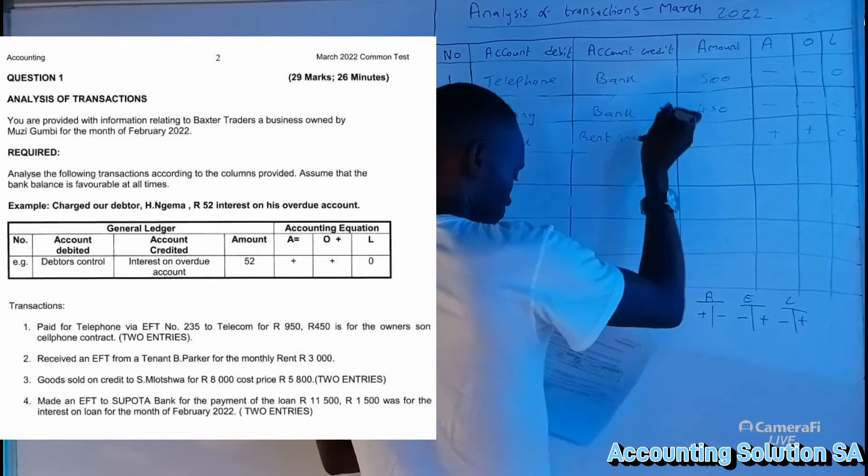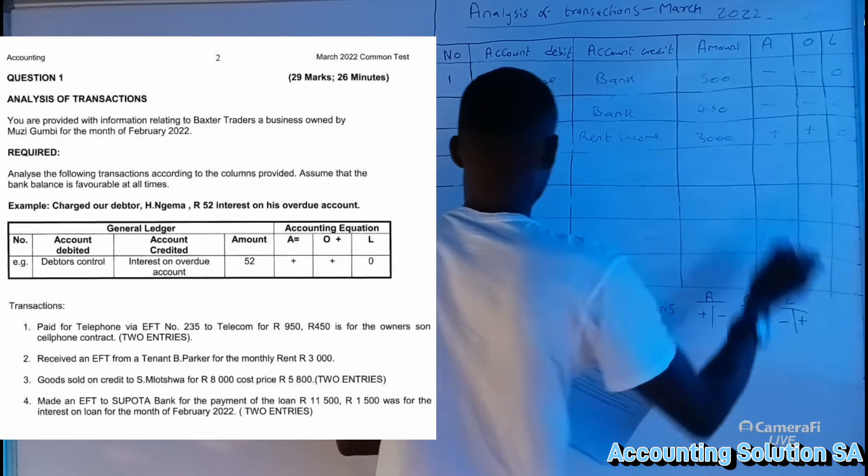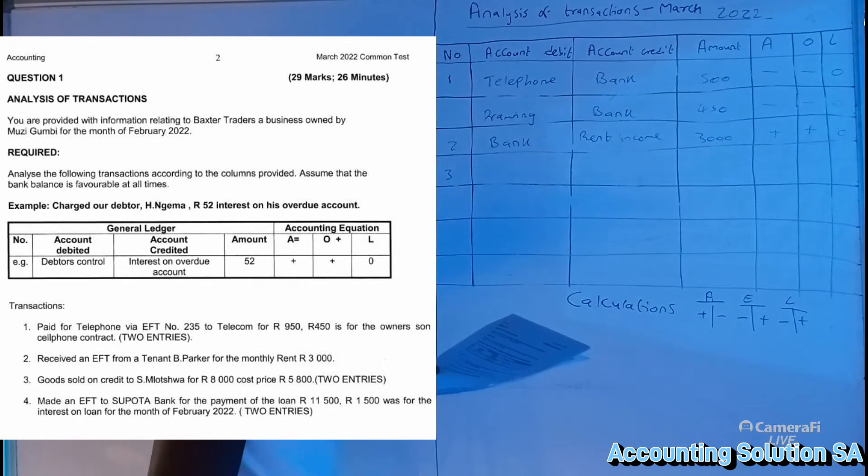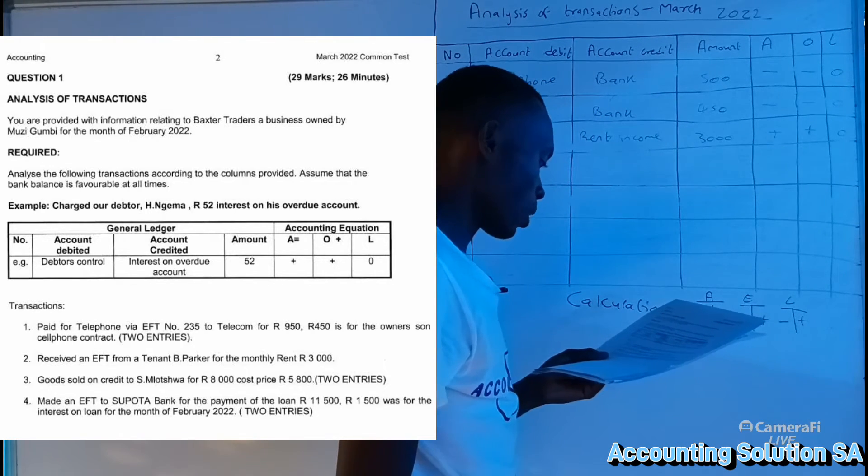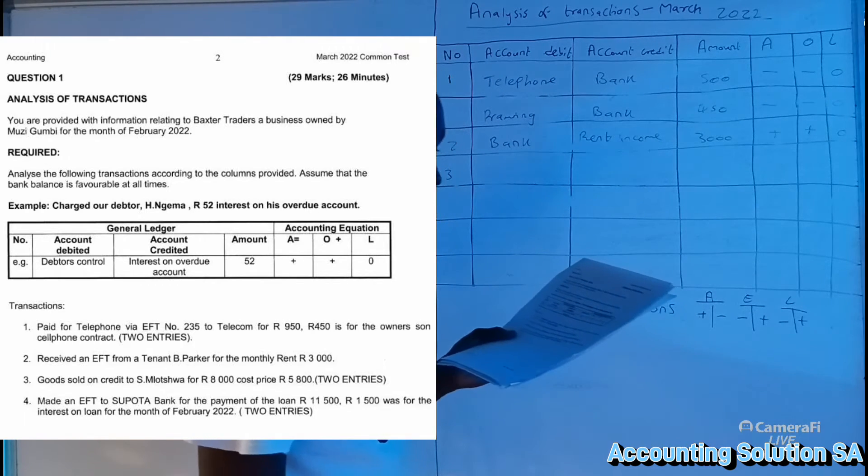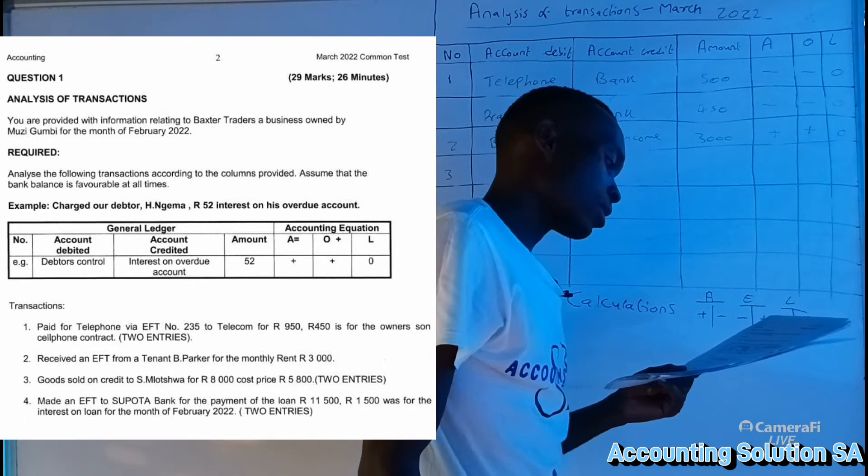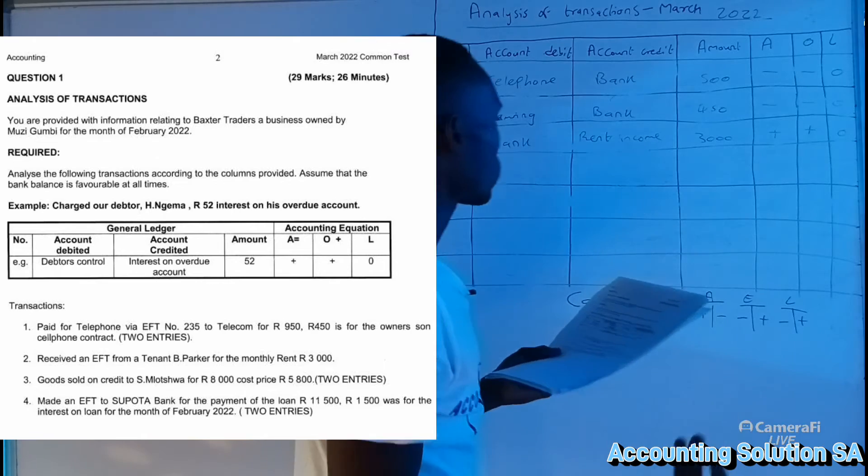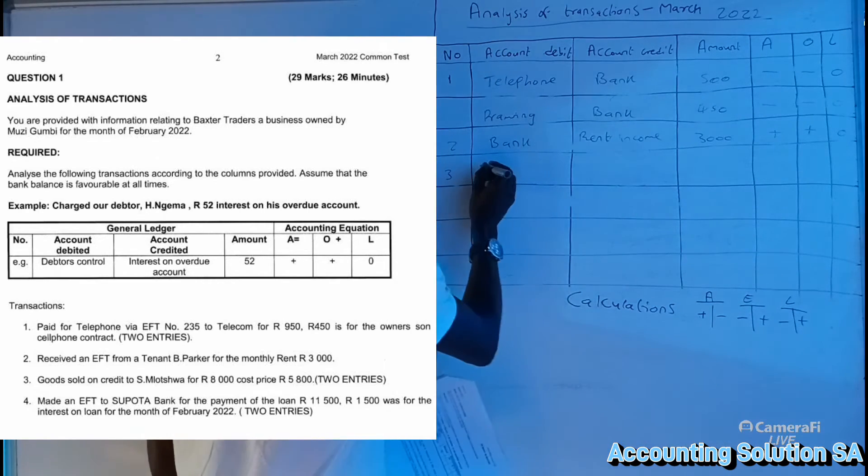Rent income and the amount is 3,000. This is number two. And number three, they said goods sold on credit to Motho Tour for 8,000, cost price is 5,800. We sold goods on credit. If we sold goods on credit, we record debtors control, not bank. Debtors control.